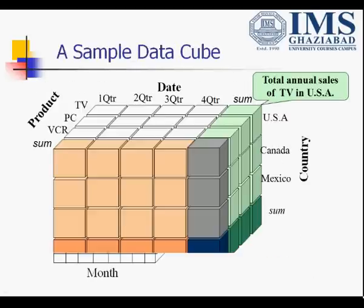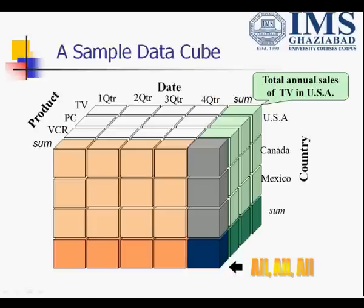Let's take a sample data cube. In one dimension we can store date on the basis of first, second, third, and fourth quarter. In the second dimension we can store country like USA, Canada, and Mexico. In the third dimension we can store product. The cube can store the sum of all values — for example, the total annual sale of TV in USA. This is the simple data cube which shows how data are arranged in cube form. OLAP is performed on such a data cube for multidimensional analysis.